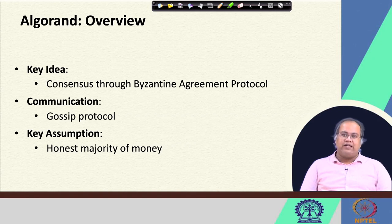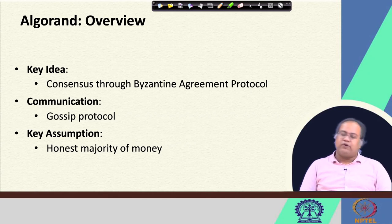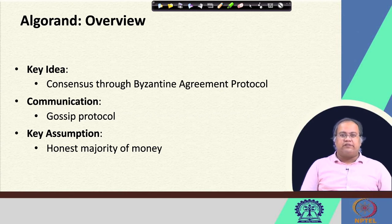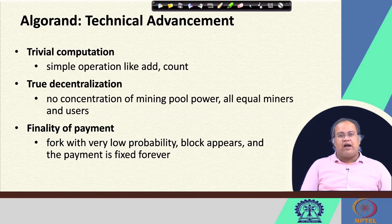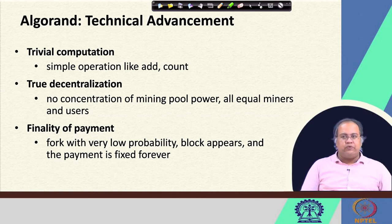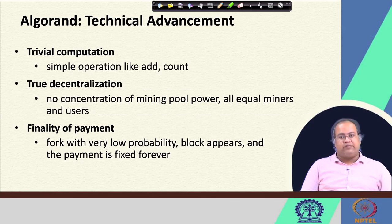To participate in the system you need to hold a good amount of Algorand tokens to prove that you are a legitimate user who has done many transactions. The different technical advancements made by Algorand are as follows: first, it uses trivial computation — simple operations like addition and counting — it does not do any complex mathematical operations like finding nonces from a hash, which takes a lot of time.